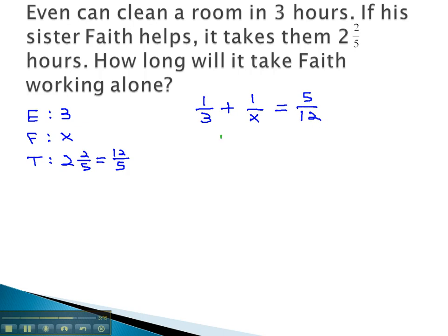Now we can solve by multiplying everything by the least common denominator, which will be 12x. Multiplying by 12x on each term, 12 over 3 reduces to 4.